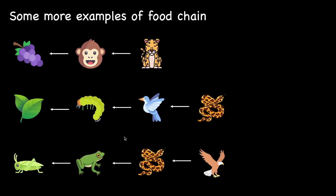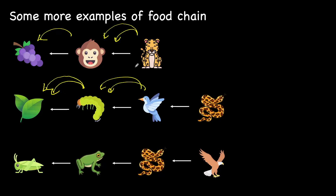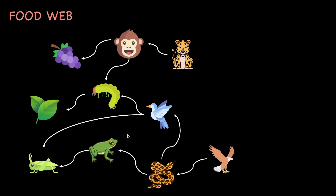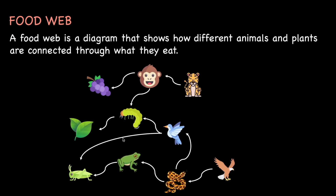Here are a couple more examples of food chains: monkeys feeding on grapes, while certain carnivores sometimes feed on these monkeys. Similarly, caterpillars feed on plants, while birds feed on those caterpillars. But this is not fixed — birds don't always eat caterpillars; sometimes they eat berries, and sometimes monkeys feed on worms or other insects. So although these are all different food chains, they are all interconnected to each other. When they are all interconnected, they end up forming a web, and this web is what we call a food web.